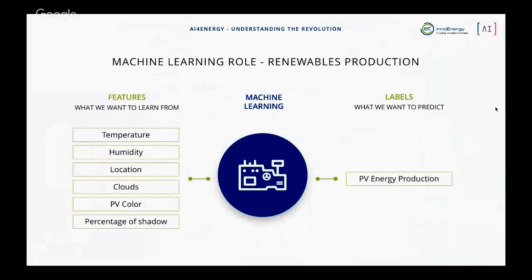With machine learning — this is a classic supervised learning example — we can take features like temperature, humidity, location, cloud cover, the color of the PV panel as a proxy for how dirty it is, and shadow on the panel. We map these to the label of photovoltaic panel energy production. The machine learning algorithm finds the relationship between features and label, allowing us to predict how much the panel will produce in energy for any future state. This makes renewables more predictable and therefore easier to integrate.